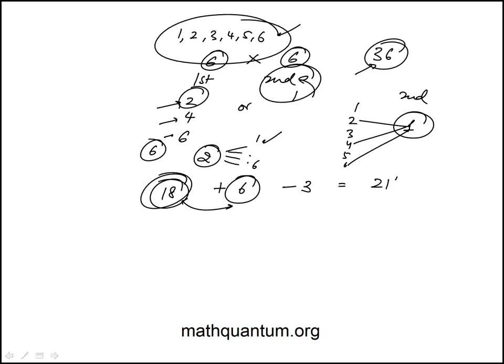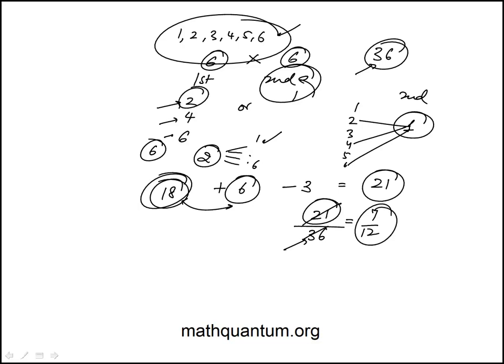The total number of favorable outcomes is 21 — the number of outcomes that satisfy the given condition. So the probability is 21 over 36. Dividing both by 3 gives 7/12. The answer is 7/12, choice B.